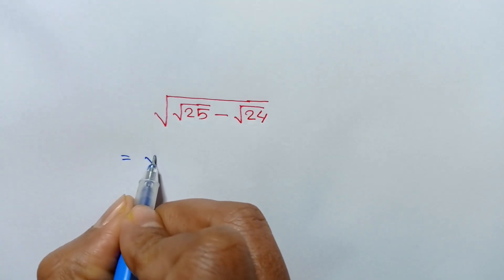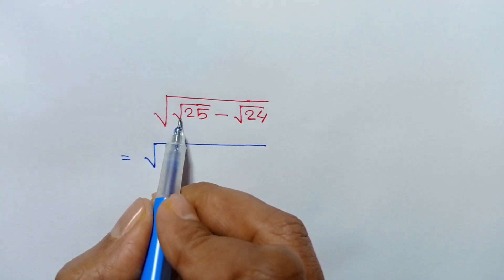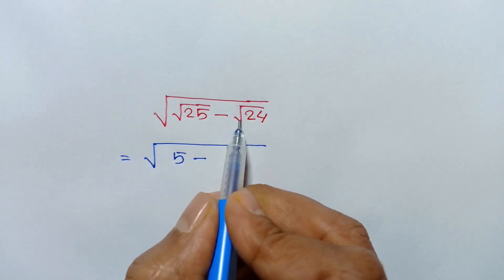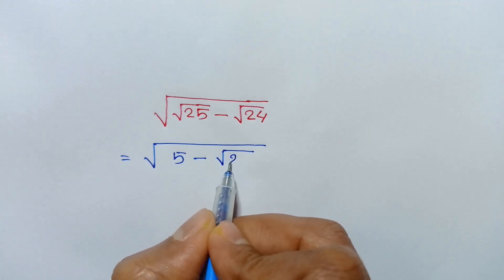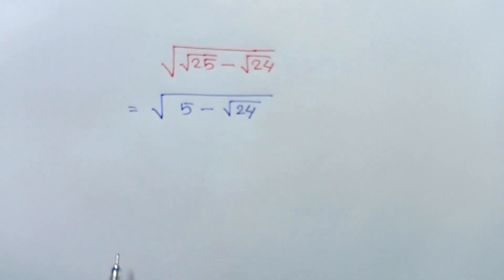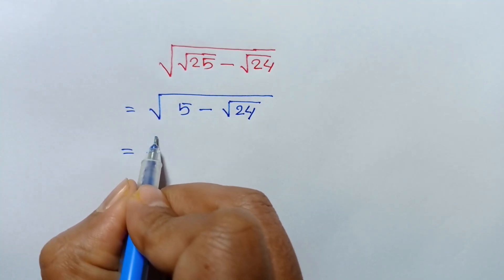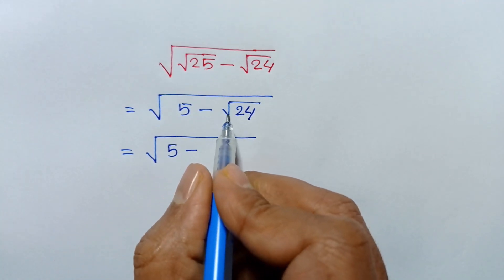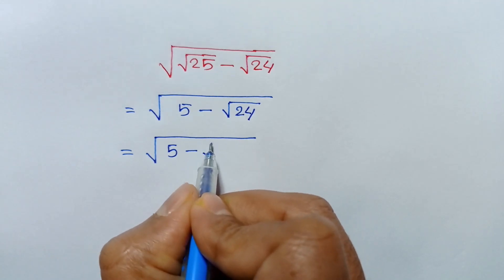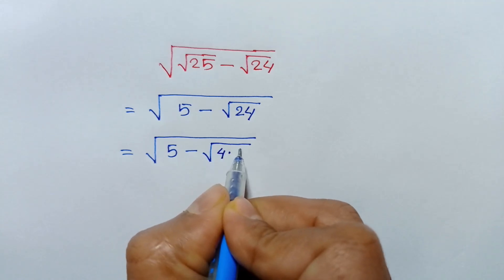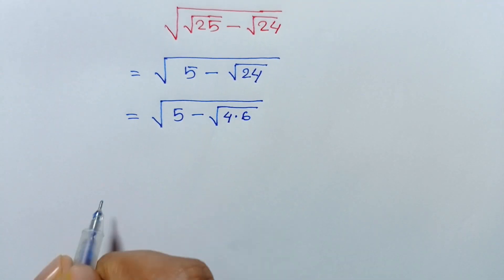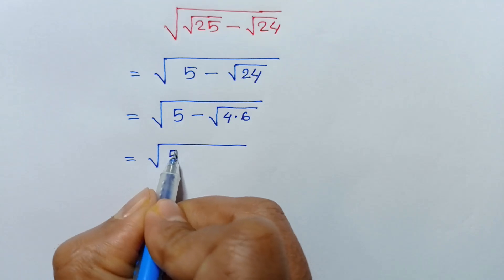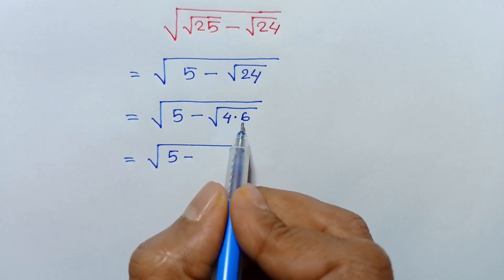This is equal to square root of 5 minus square root of 24. This can be written as square root of 5 minus square root of 4 times 6.